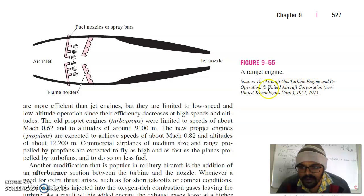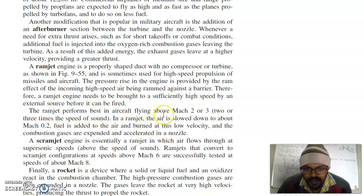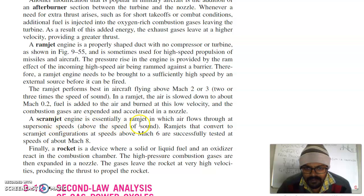Because there is no compressor, for the starting purpose, either they have to supply compressed air or they will launch at a higher speed. The initial speed has to be provided. They are mostly suitable for missiles and if they are used for aircraft, the aircraft at starting needs to be supplied with high pressure air. The ramjet performs best in aircraft flying above Mach 2 or 3. In the ramjet, the air is slowed down to about Mach 0.2. Fuel is added to air and burned at this low speed. And the combustion gases are expanded and accelerated in the nozzle. Scramjet engine is essentially a ramjet in which air flows through at supersonic speed above the speed of sound. Ramjets that convert to scramjet configuration at speeds above Mach 6 are successfully tested at speeds of about Mach 8.